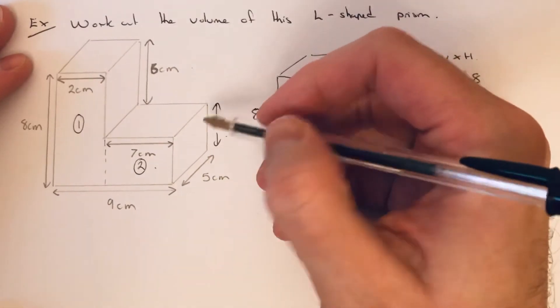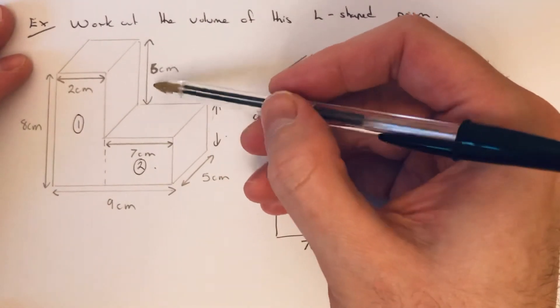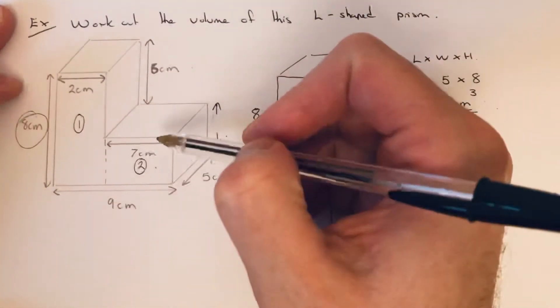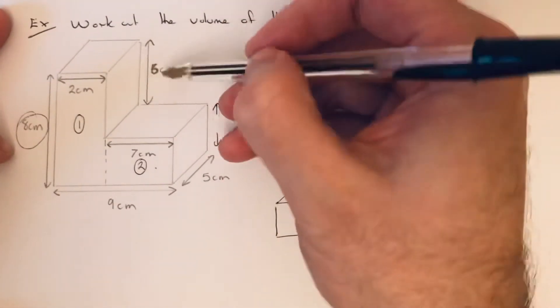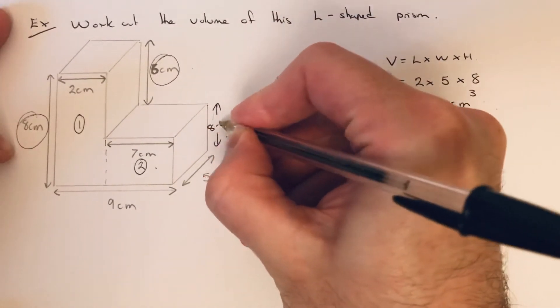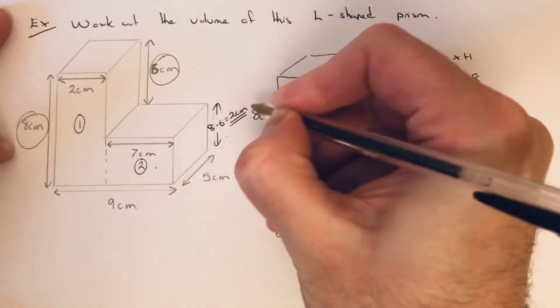We haven't got the height of the box here, but we can work it out. We know the height of the full L-shape is 8, the height of this bit is 6, so this length here would be 8 take away 6, which is 2 centimeters.